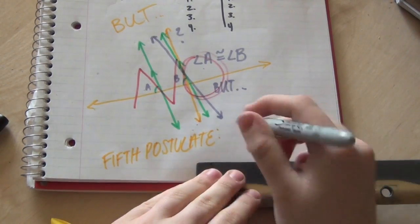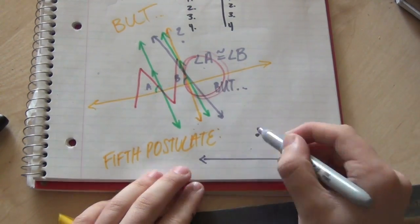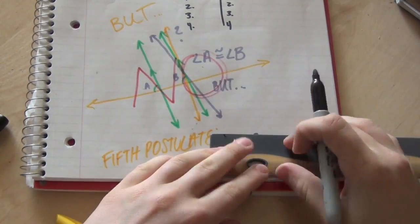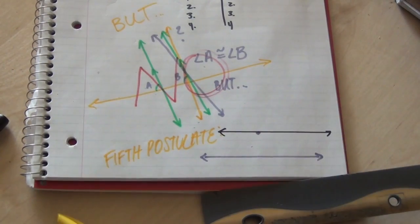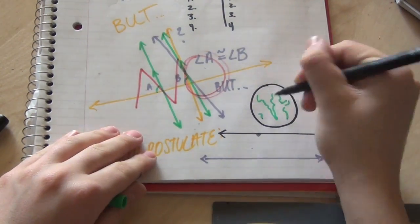Well, no. This is called the parallel postulate, and it's Euclid's fifth and most controversial postulate. It states that if you have a line and a point that isn't on a line, then only one line that passes through the point is parallel with the original, and while that makes sense at first,